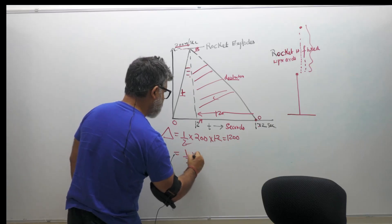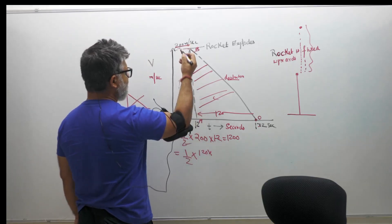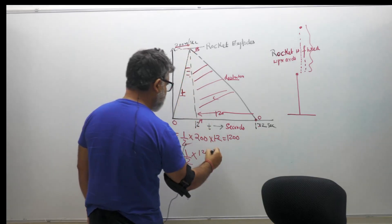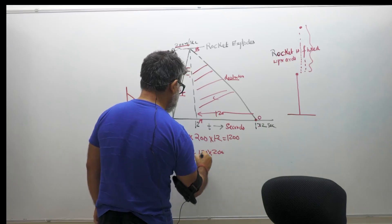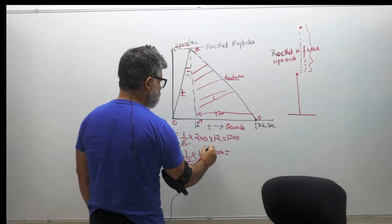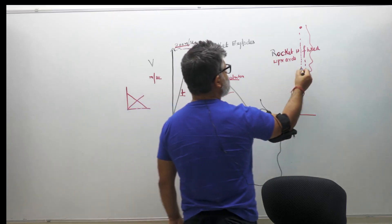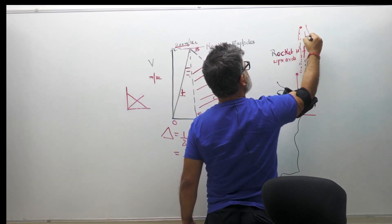The height is again 200. So half into 120 into 200 equals 12,000. So it continues to move till 12,000 meters more after the explosion.